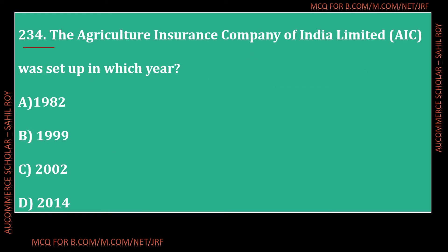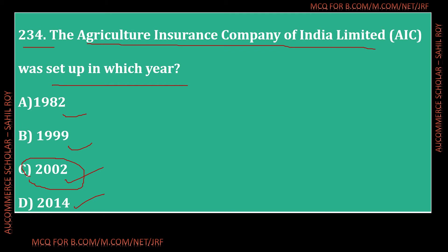Question number 234: The Agriculture Insurance Company of India Limited was set up in which year? Option A - 1982, Option B - 1999, Option C - 2002, Option D - 2014. The correct answer is Option C - 2002. The Agriculture Insurance Company of India Limited was set up in the year 2002.